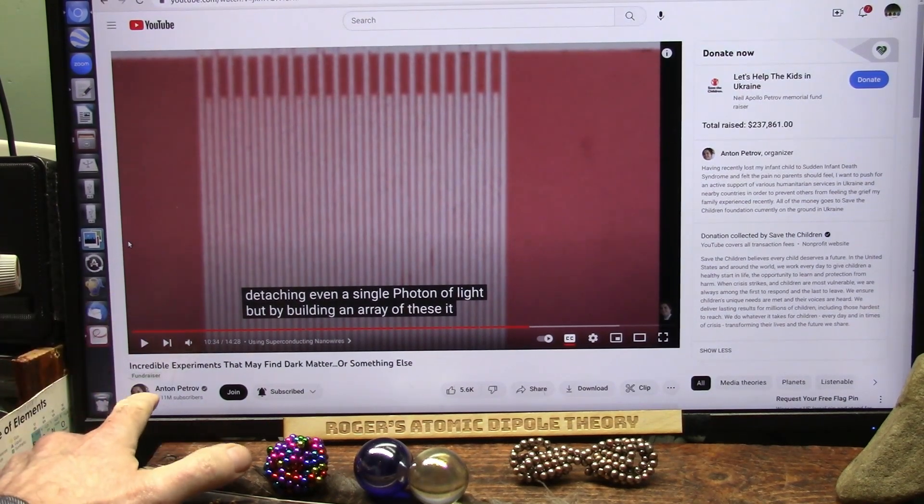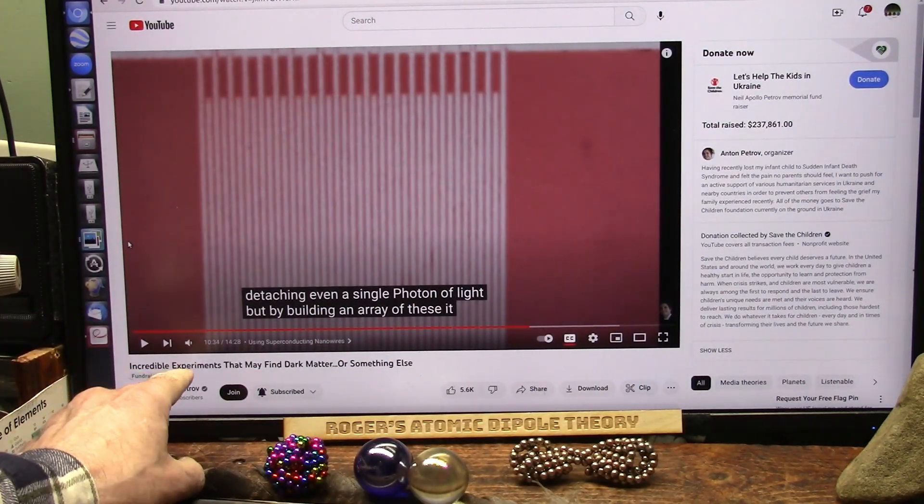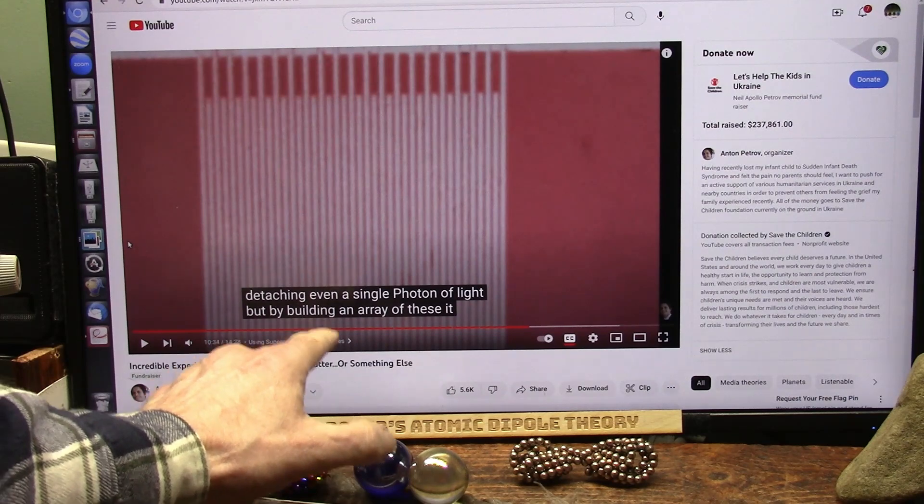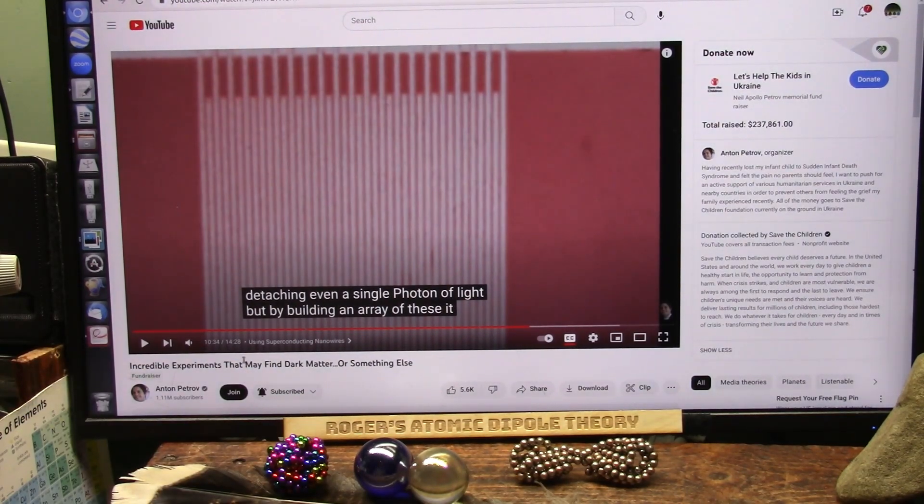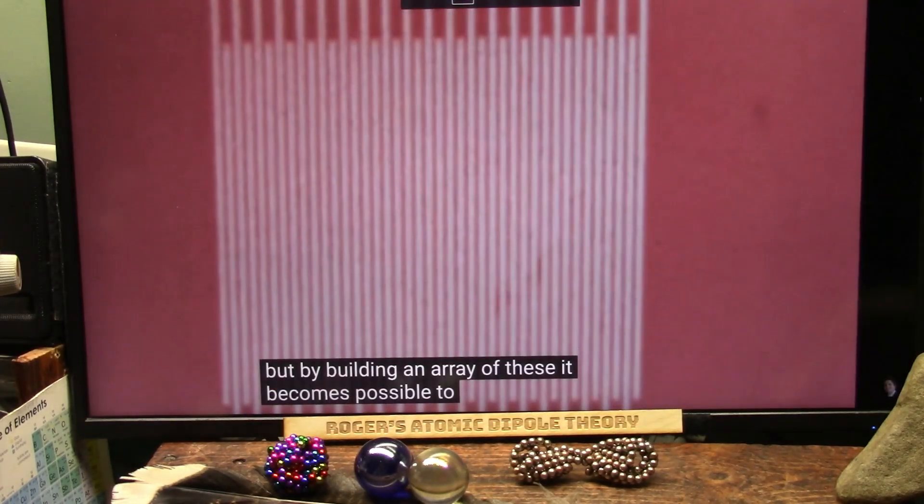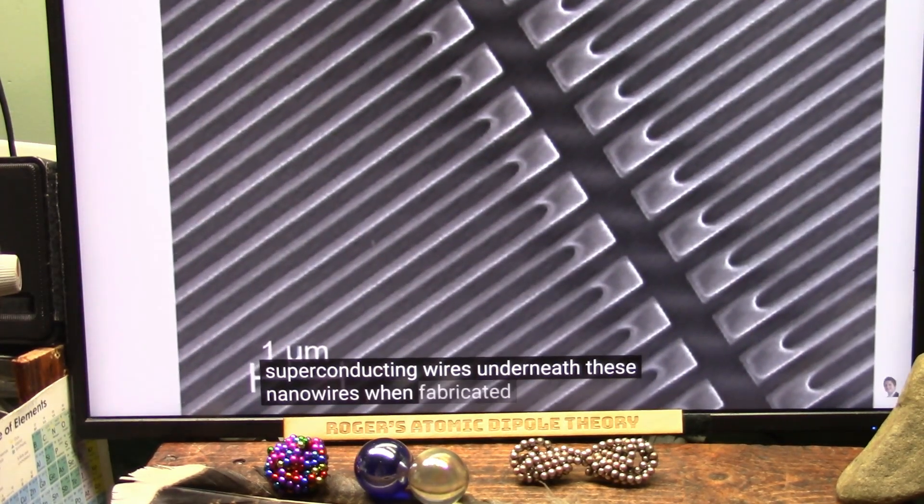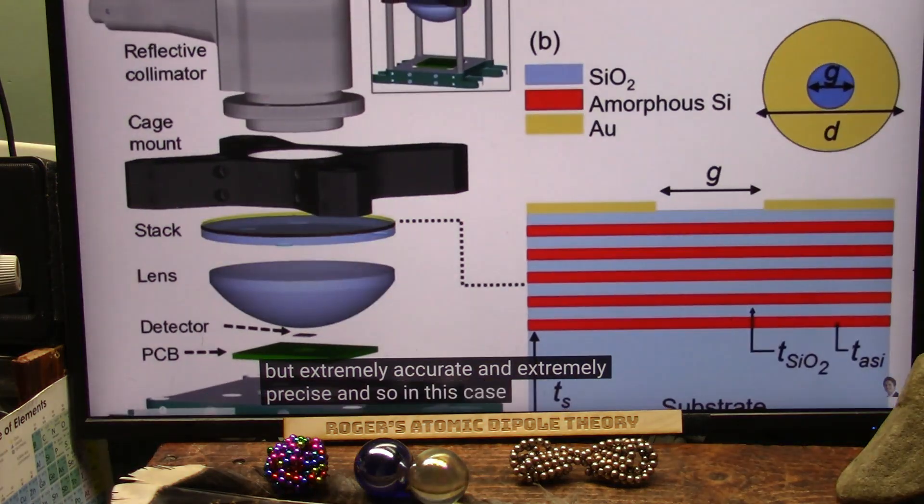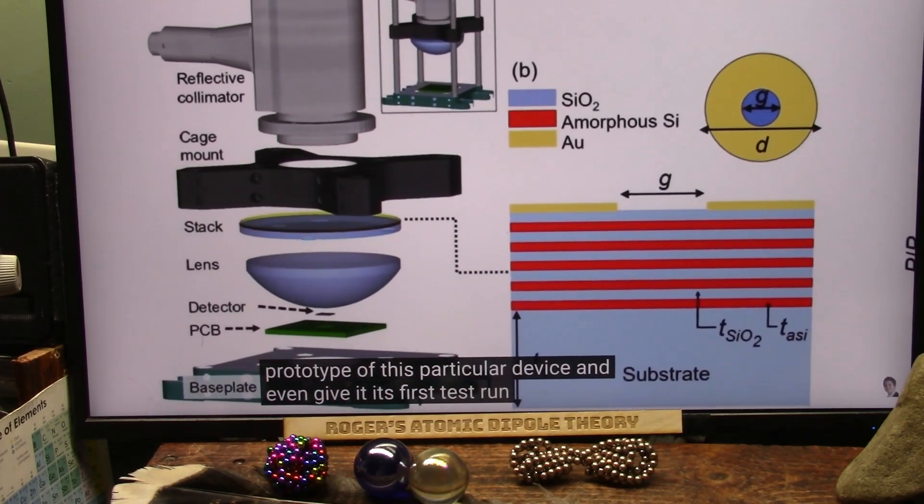One of my favorite guys, Anton Petrov. He's talking about photon experiments. Incredible experiments that may find dark matter or something else. They're using a machine that can detect single photons of light. It becomes possible to actually keep track of an entire area where these particles could pass through affecting the superconductor wires underneath. These nanowires would look something like this. Really small but extremely accurate and precise.